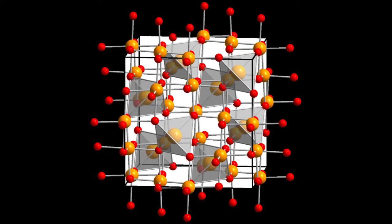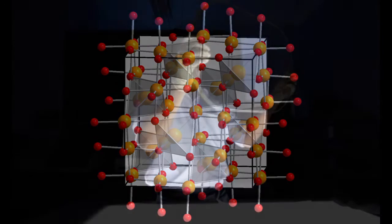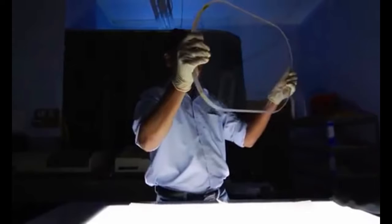ALON stands for aluminum oxynitride, and it's a fascinating material that's getting a lot of attention because of its awesome properties. ALON is kind of like a transparent armor that's really tough.